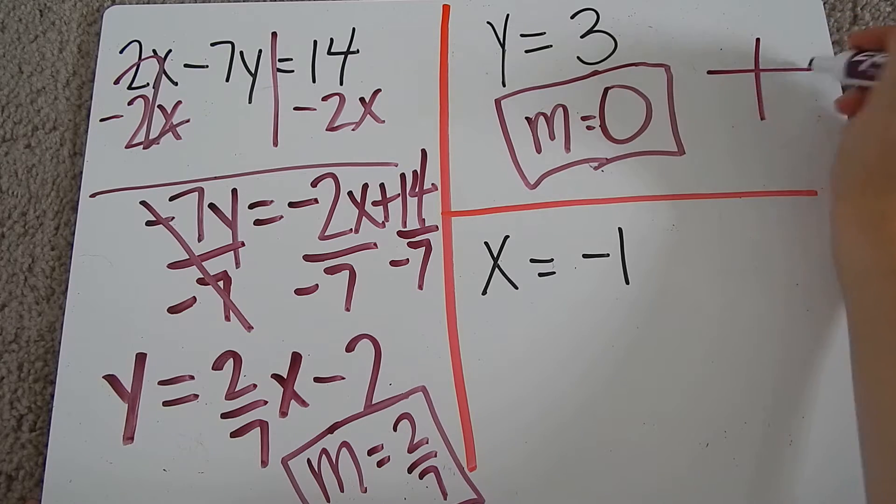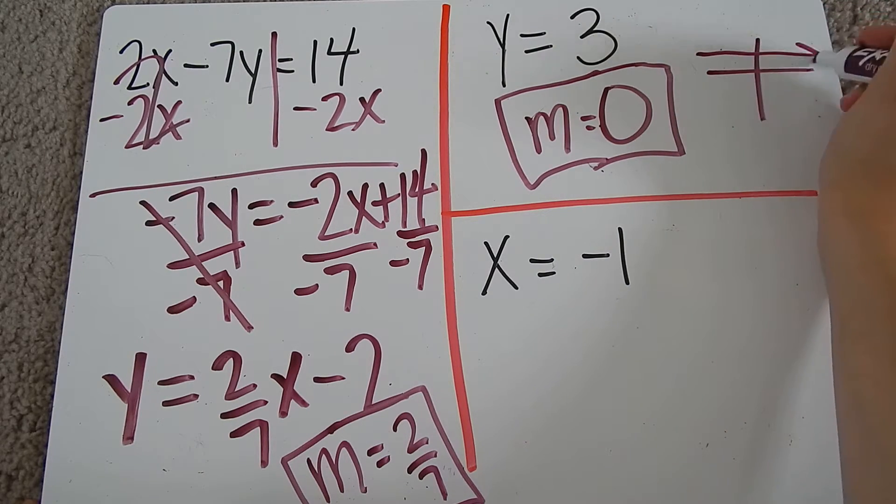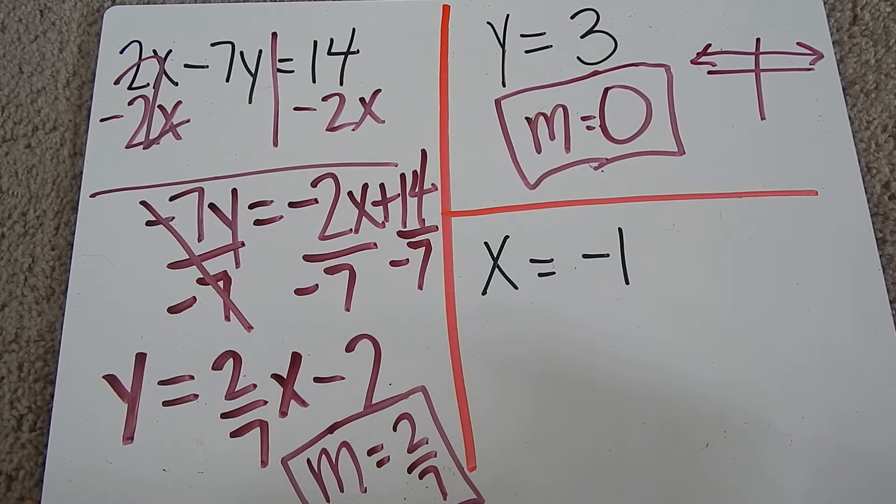You could think about this visually. y equals 3. If I drew a graph, here is my y, and so 3 would be somewhere there. And I draw a horizontal line. Remember, horizontal is 0, so the slope will be 0.